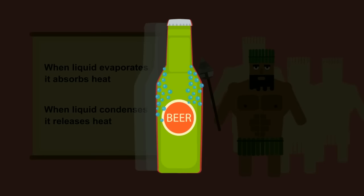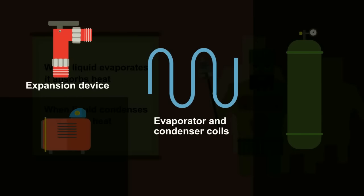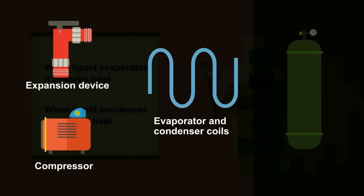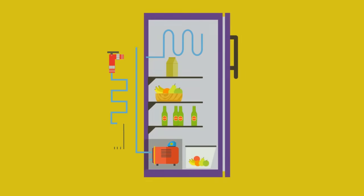To pull off this frosty feat, a refrigerator uses five major components: an expansion device, evaporator coils, a compressor, condenser coils, and a refrigerant. The refrigerant is a liquid that enters the expansion device.